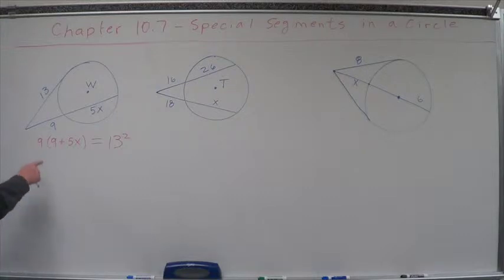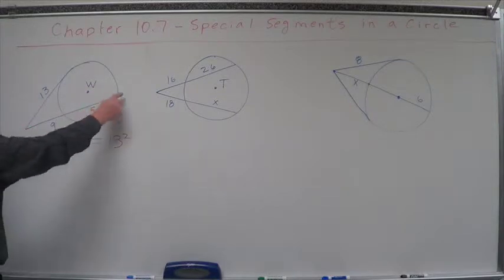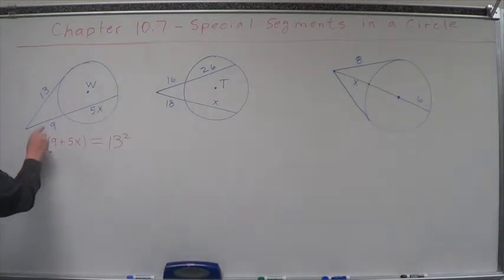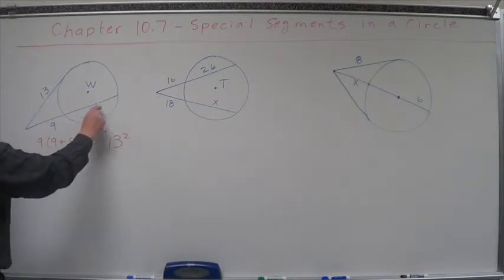All right, so let's distribute this. 9 times 9. Do you understand? This is the exterior portion. This is the entire secant here, the entire length of that secant. This is only the exterior portion times the entire length, 9 plus 5x. Not times, 9 plus 5x.